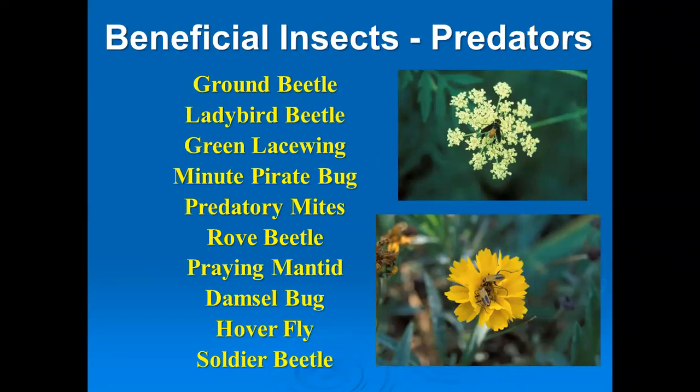Beneficial insects are usually the little guys that we rarely see or pay attention to. They can include ground beetles — the black beetle that runs along the ground. If you have aphids on your plants, you can use a hard spray of water to knock them off, and then ground beetles on the ground go and devour them. We know that the ladybug or ladybird beetle thrives on eating aphids, as does the green lacewing. A lot of bugs that we really don't know about can be very helpful in eating other bad bugs, and they're also pollinators.